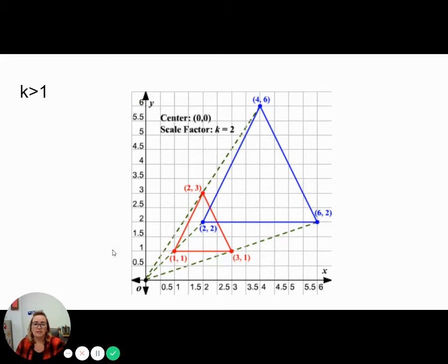So here's an example of a K greater than one. We start with this red triangle. We use a scale factor of two. And now our new triangle, this blue one, is two times bigger than the one we started at. That's what scale factor means. It means you are making it an enlargement or a reduction. In this case, K is larger than one. It is an enlargement. We are taking and doubling our triangle.